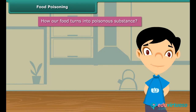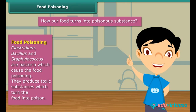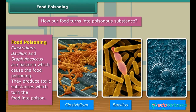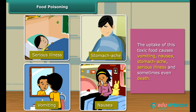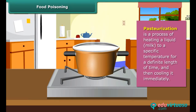In summer, if food is left in the open for a longer duration, the food turns stale and finally produces poisonous substances. The cause of this is bacteria — some bacteria like Clostridium, Bacillus, and Staphylococcus cause food poisoning. This food can cause harm to us. We can preserve our food by several methods. We use the pasteurization process to preserve milk.